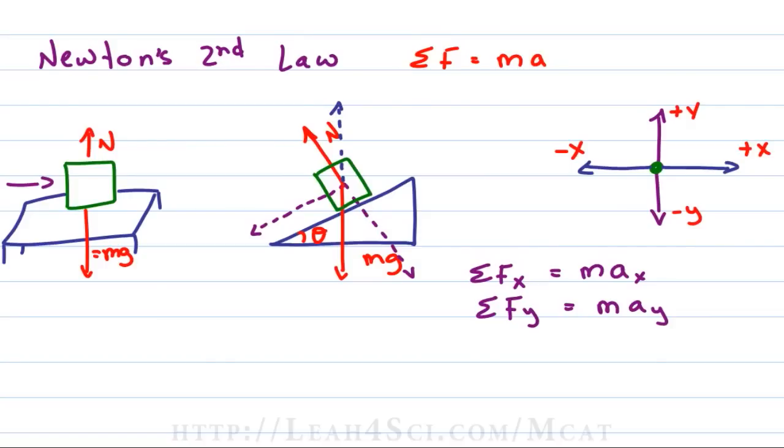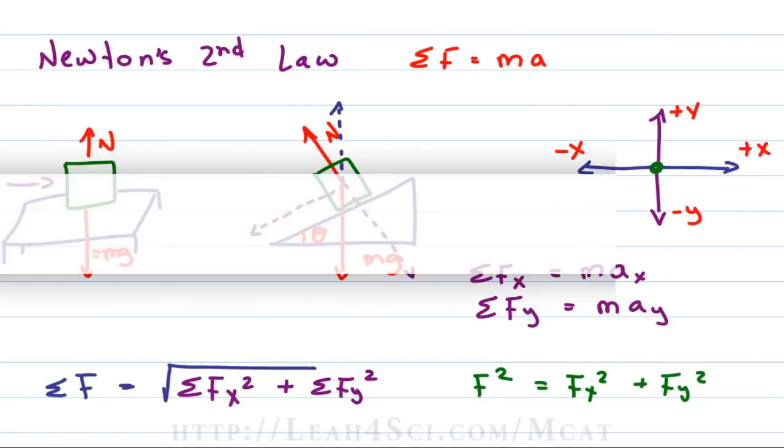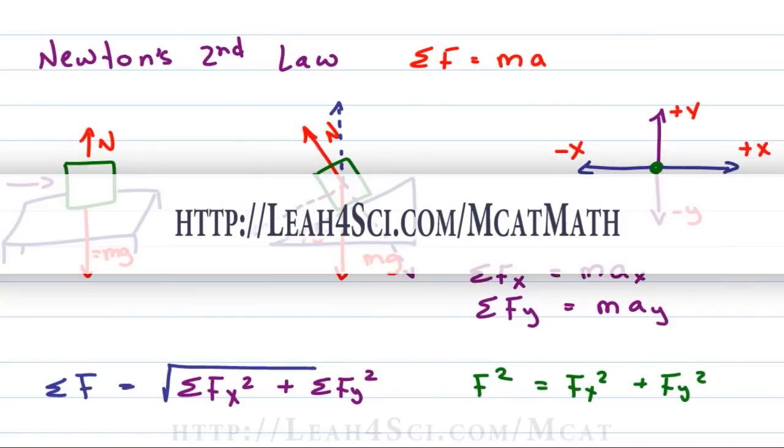Once you've found the sum of the forces in the x direction and sum of the forces in the y direction, you can find the total force, which may be in the x or y direction or at some vector in between. To find the total force, you set up the equation: the sum of the forces equals the square root of the sum of forces in x squared plus the sum of forces in y squared. This comes from the Pythagorean theorem, which tells you that F squared equals Fx squared plus Fy squared. If you're not comfortable with this, go back to my MCAT Math video series at leah4sci.com/MCAT Math.